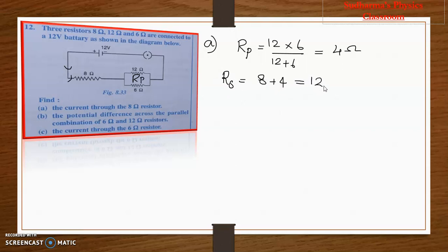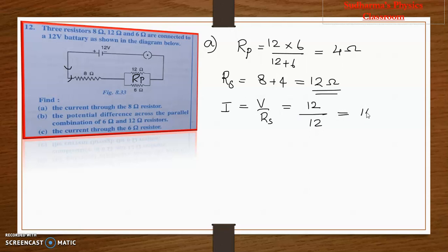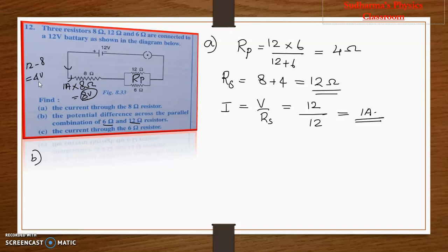The current through the 8 ohm resistor — since 8 ohm is in series — this is the total current flowing in the circuit. I = V / R_series. Total voltage is 12 volt and series resistance is 12 ohm, so total current = 1 ampere. Next, the potential difference across the parallel combination of 6 ohm and 12 ohm: first calculate the voltage across 8 ohm — 1 ampere × 8 ohm = 8 volt. So 12 − 8 = 4 volt is dropped across the parallel combination.